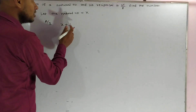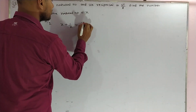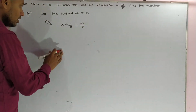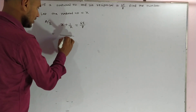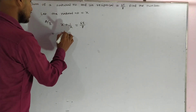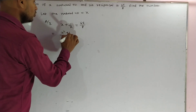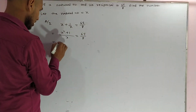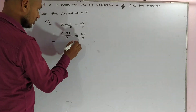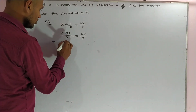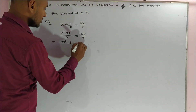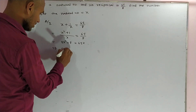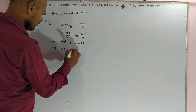The natural number and its reciprocal 1 upon x is equal to 65 upon 8. From here, take the LCM which is x, and it will become x squared plus 1 giving the value 65 upon 8. As you do cross multiplication, you get x squared plus 8 equals 65x.